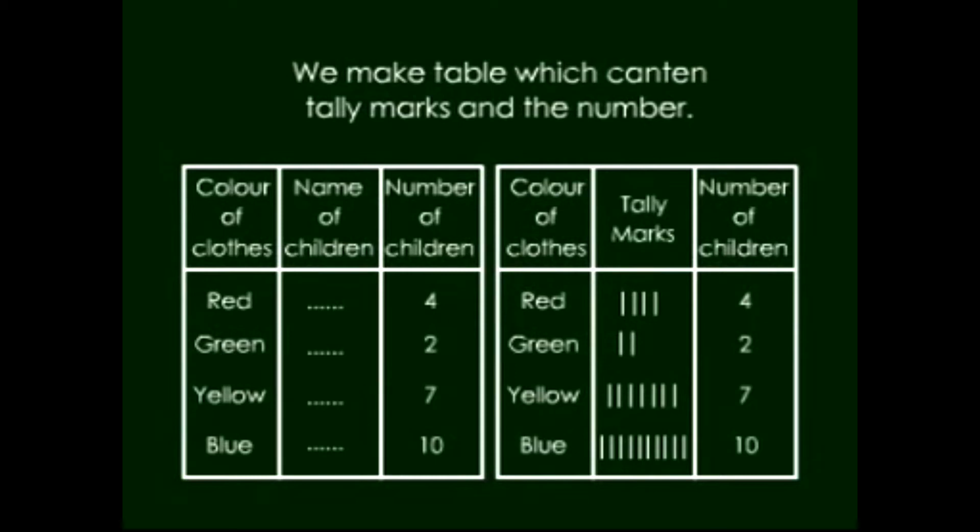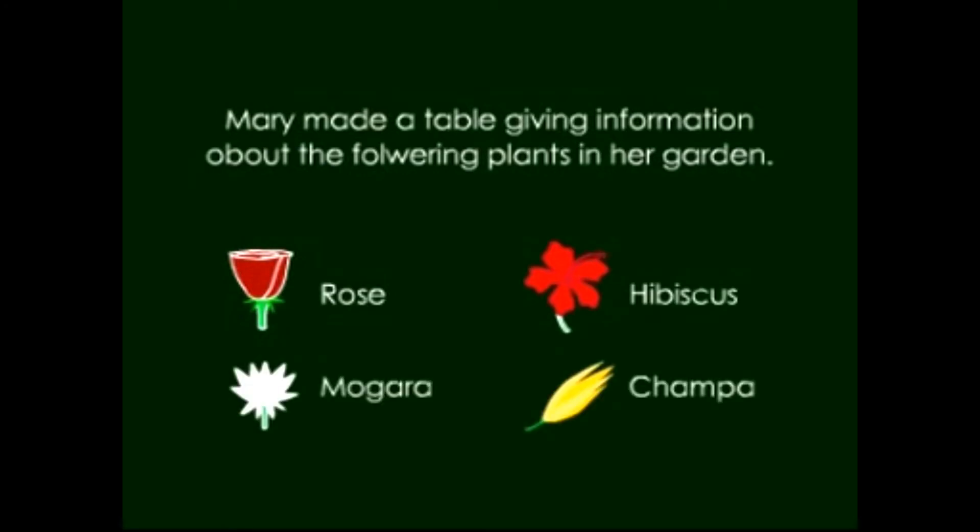Now let's do one example. Mary made a table giving information about the flowering plants in her garden. Rose flowers, Hibiscus flowers, Mogra and Champa.